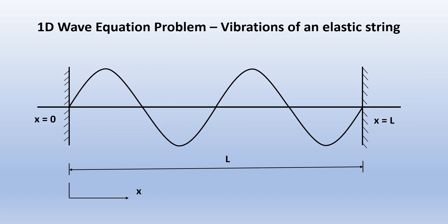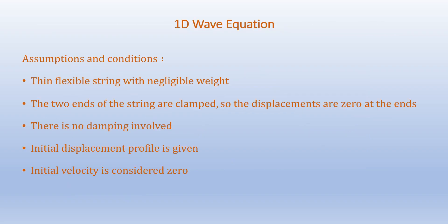Our 1D wave equation problem is shown here. We have a thin elastic string of length L which is fixed at either end. Our assumptions are that the elastic string is a thin flexible one with negligible weight. Both ends of the string are clamped so the displacements are zero at the ends. There is no damping involved. The initial displacement profile is given, and initial velocity is considered zero on the elastic string.